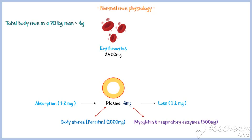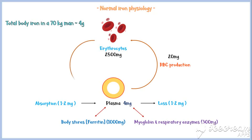About 20 mg of iron is required daily for the production of red blood cells, but the daily intake of iron into the plasma is not sufficient for this. However, about 20 mg of iron is released daily into the circulation through destruction of older red blood cells, and they are reused to produce new red blood cells.